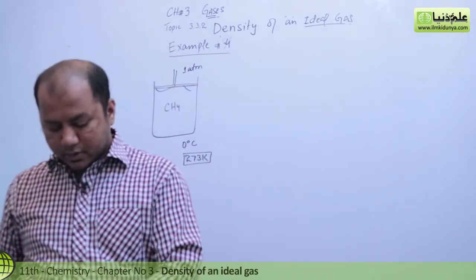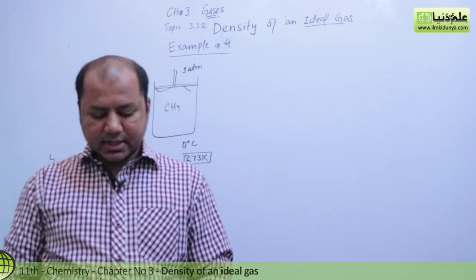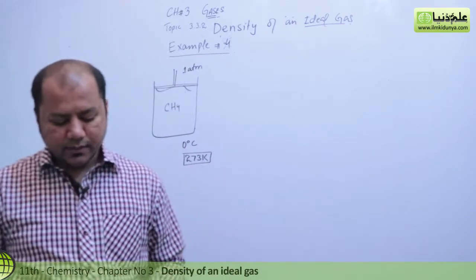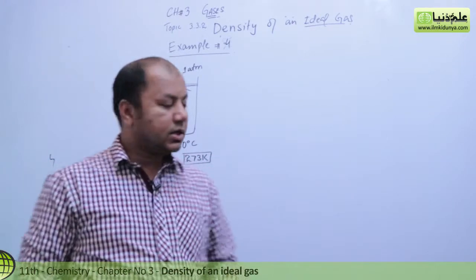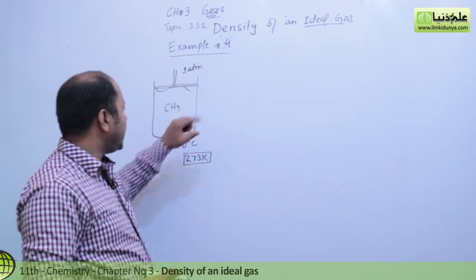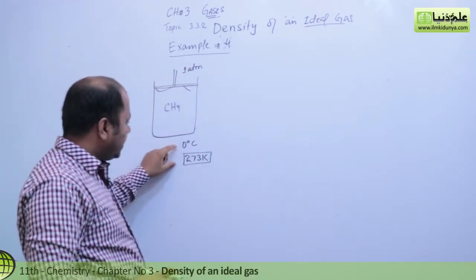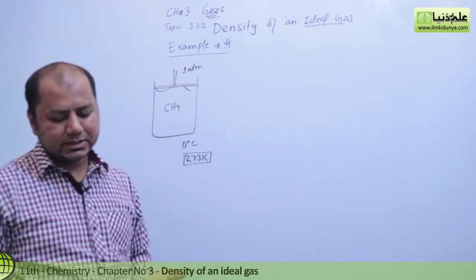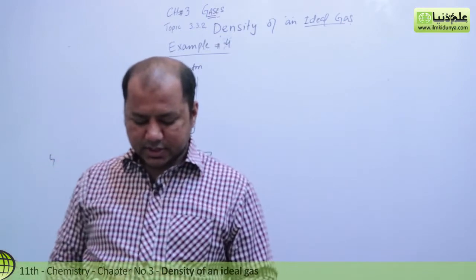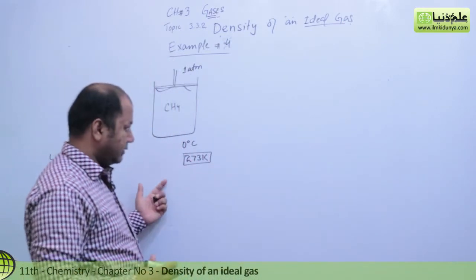Now we can find the density with this method. If you know the gas pressure, temperature, then you can find the density. Let's say conditions change. So let's say this cylinder is here.